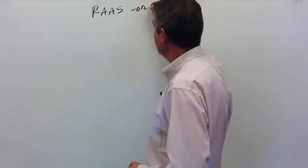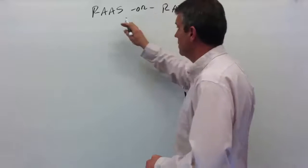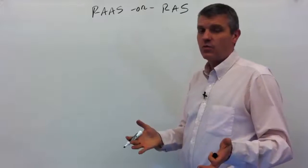Sometimes it's called the renin-angiotensin system or just RAS. These two mean the same thing: renin-angiotensin-aldosterone system or renin-angiotensin system.